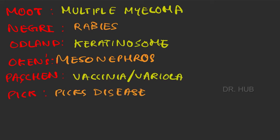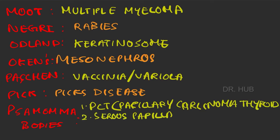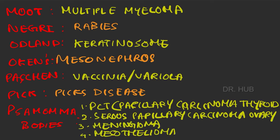Pick bodies in Pick's disease — easy to remember. Next, psammoma bodies in PCT. Psammoma bodies are present in four conditions: papillary carcinoma of the thyroid, serous papillary carcinoma of the ovary, meningioma, and mesothelioma.